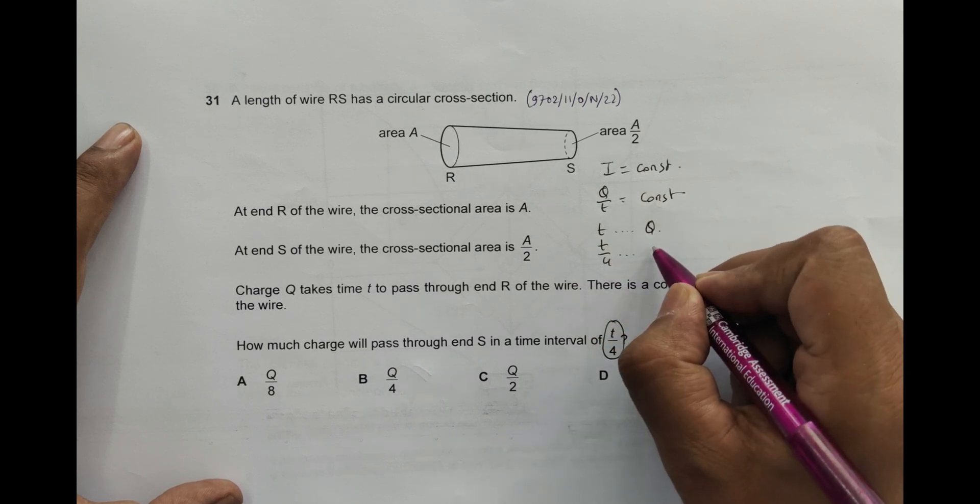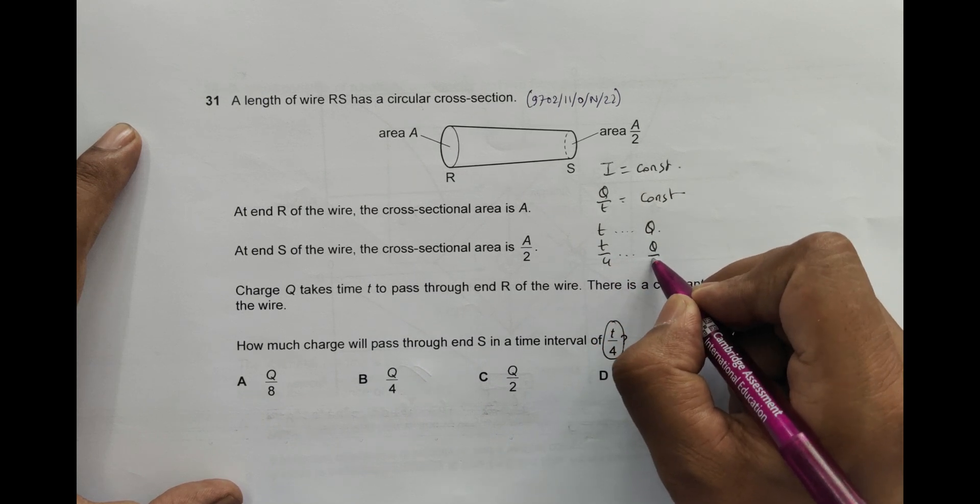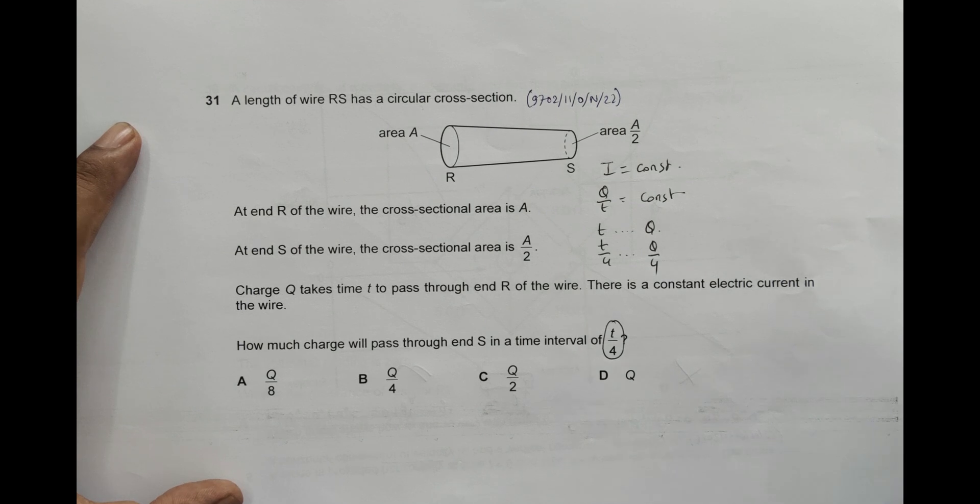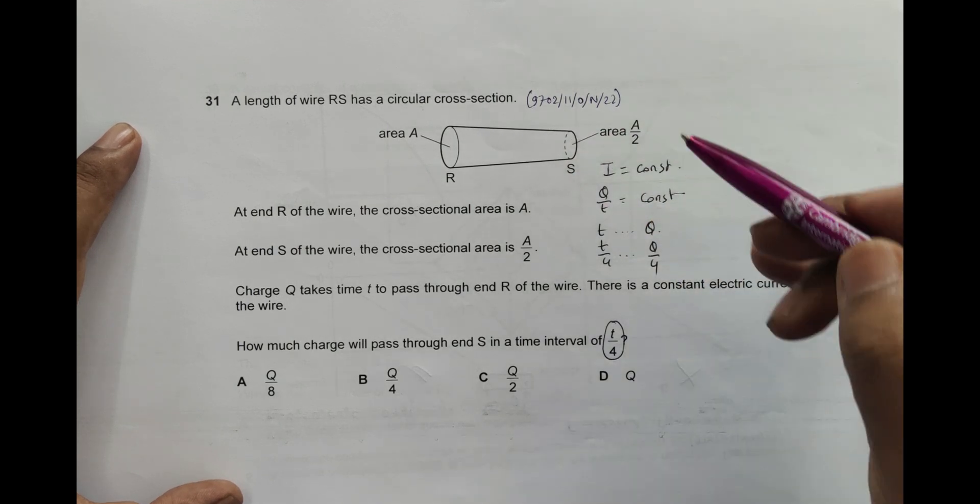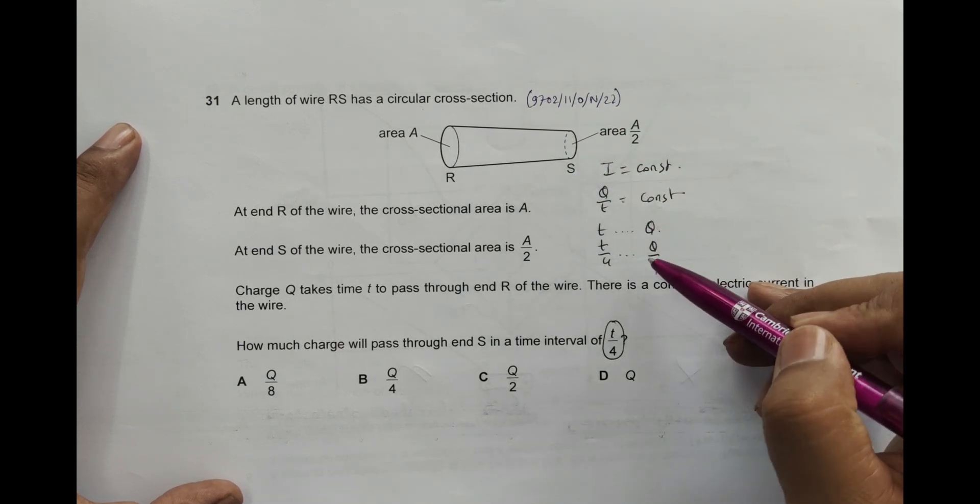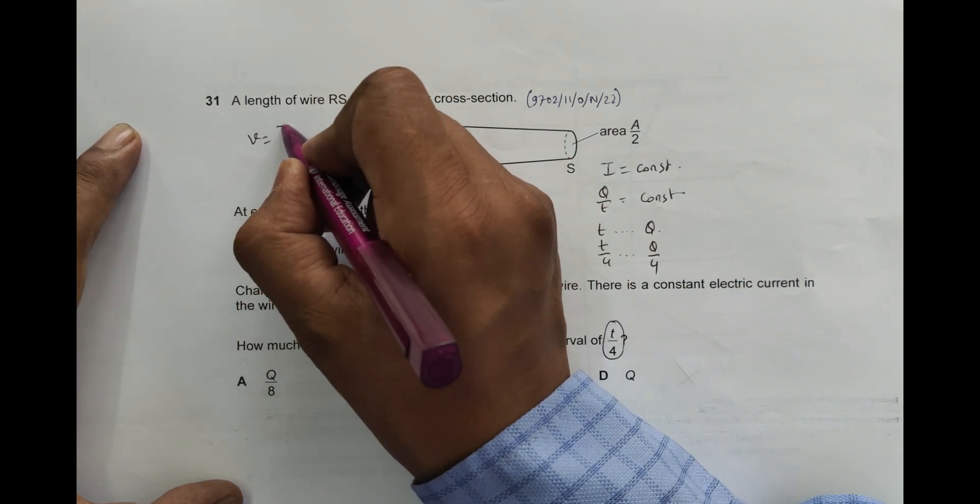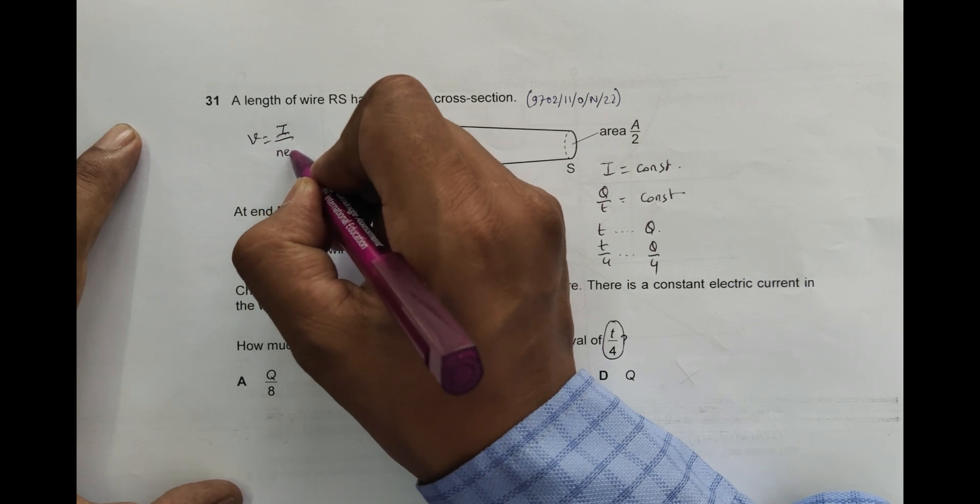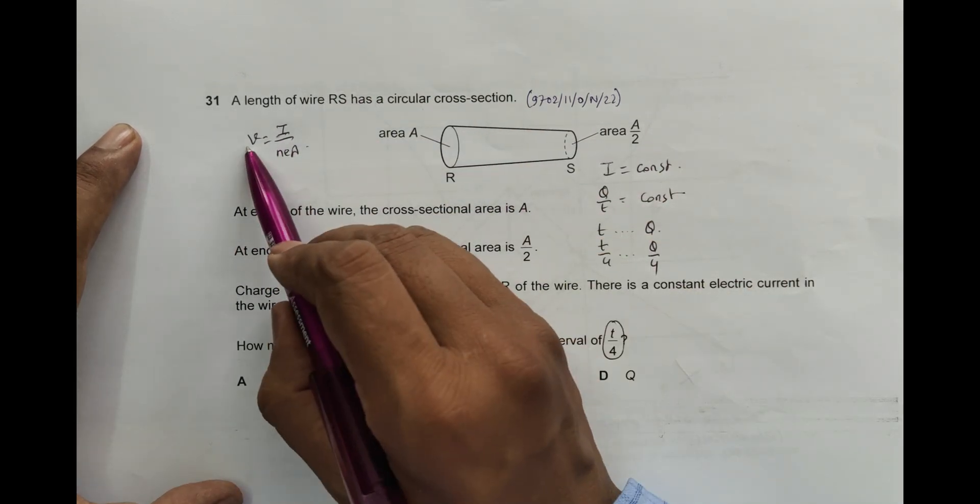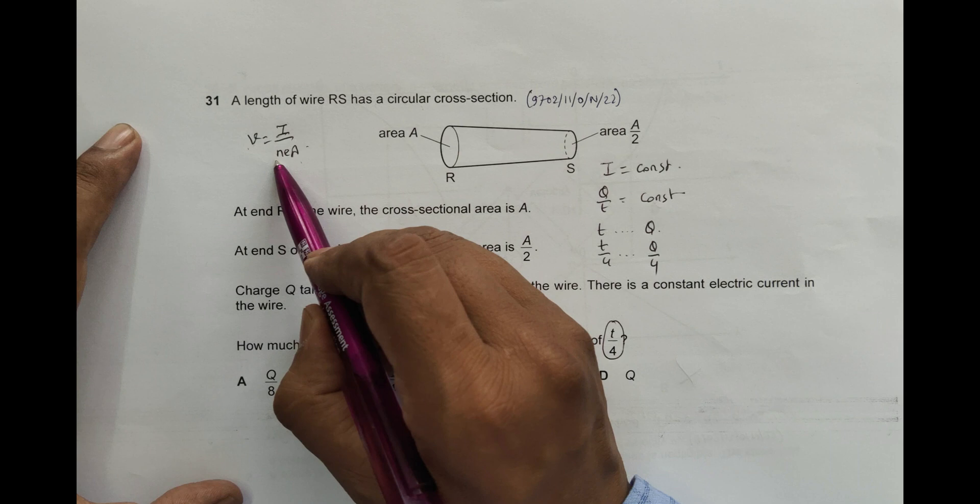The cross section has no role in the current or in the amount of charge that flows. It is because the drift velocity is equal to I by nEA. This velocity v depends on A, this v depends on n, but this current does not depend on A.